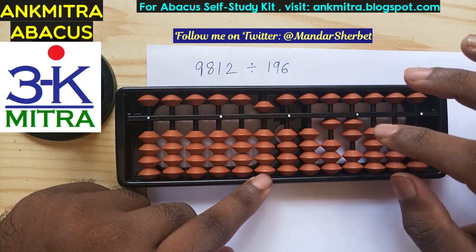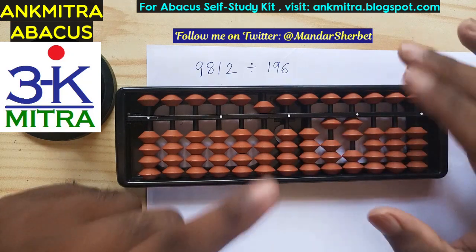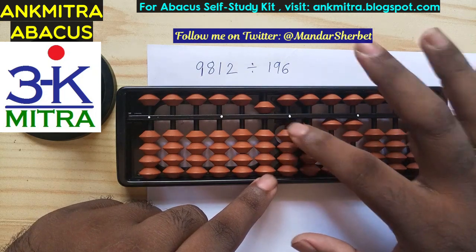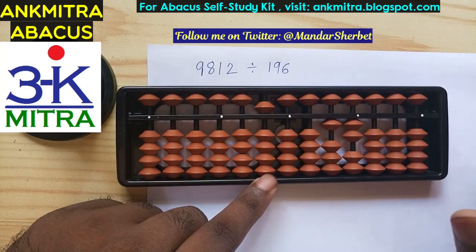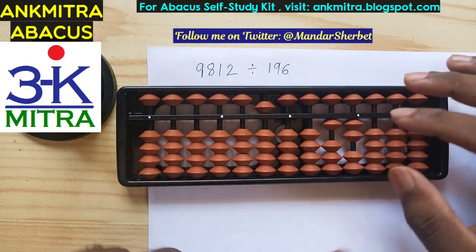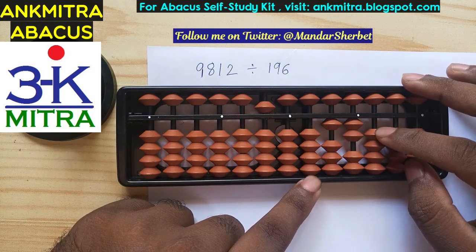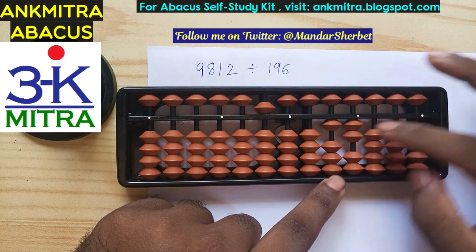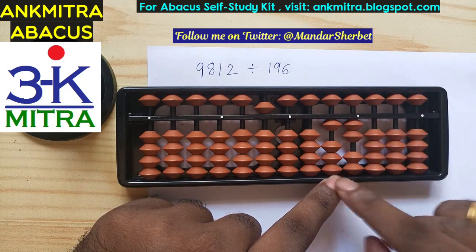In case we need to find a decimal answer, we can proceed further using the additional rods. If we don't want a decimal answer, we can stop here with quotient 50 and remainder 12. Suppose we want to find the answer up to two decimal places. We have 12 here; proceeding one place further, the number becomes 120, which is still smaller than our divisor 196. So we move one place even further and we have the number 1200.